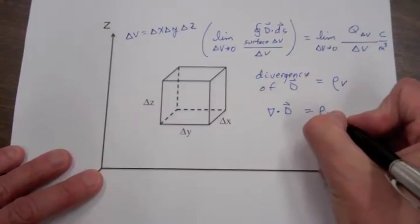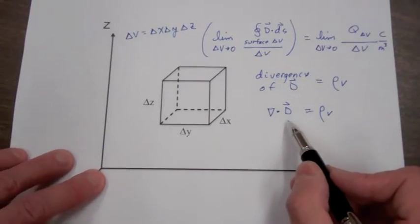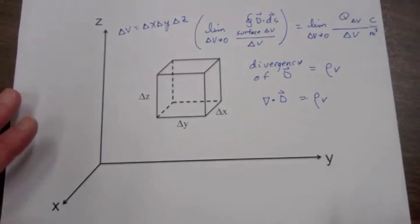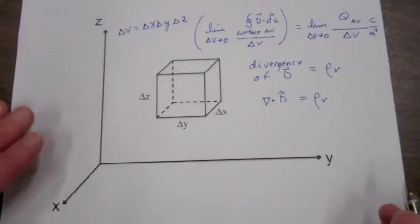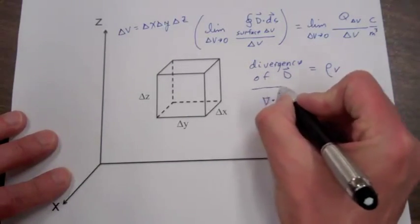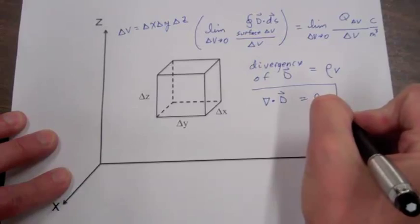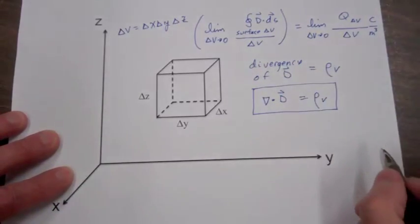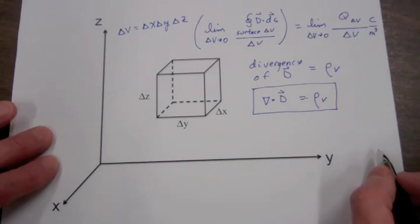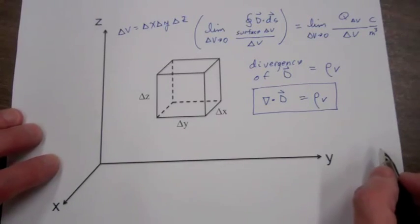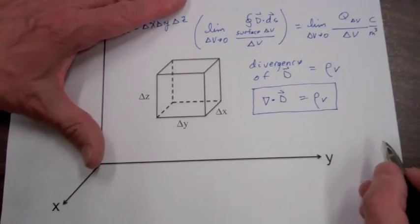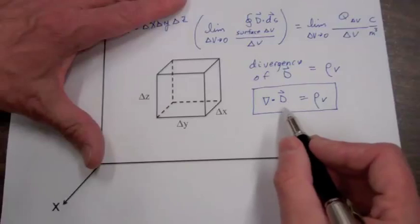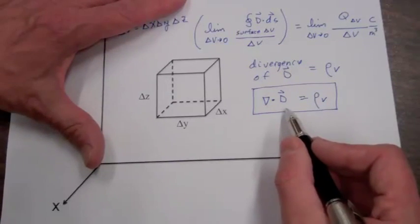So the divergence of D is equal to the charge density. The divergence of D equaling the volume charge density rho sub v is the point or differential form of Gauss's law. Now we have a physical feeling for what this operation of divergence is doing.